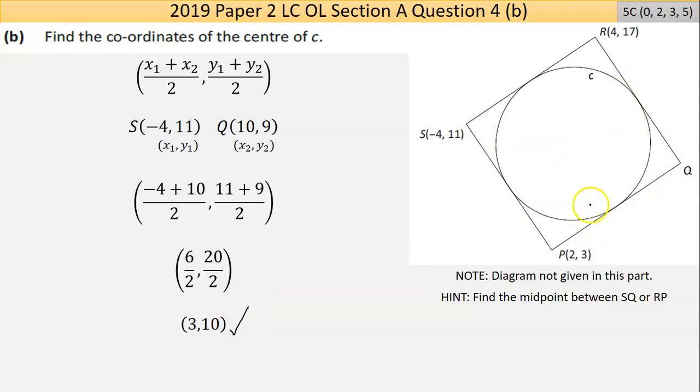And then simplified it down. I end up getting (3,10). If you think about it, that would make sense. It's halfway between 4 and 2, which is 3. Halfway between 17 and 3, which is 10. Or from this perspective, you can do the same thing. So it seems legit. That's part B.